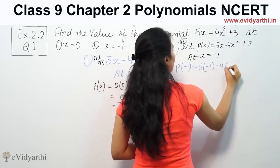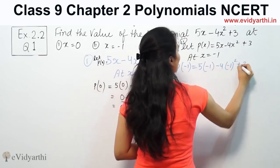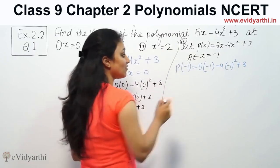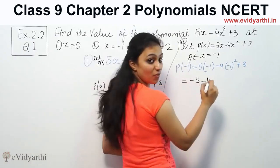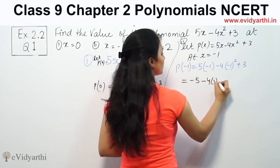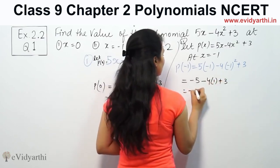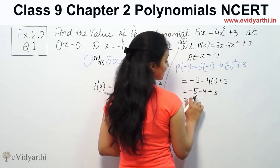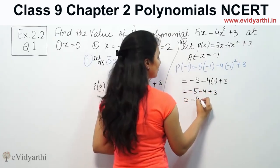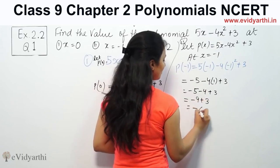5(minus 1) minus 4(minus 1)² plus 3. So 5 into minus 1 is minus 5, minus 4, minus 1 squared is 1, plus 3. So minus 5 minus 4 plus 3, which is minus 9 plus 3, equals minus 6.